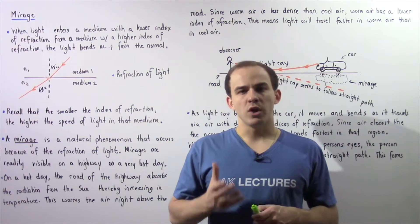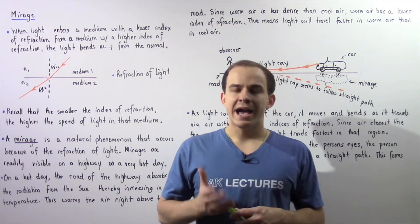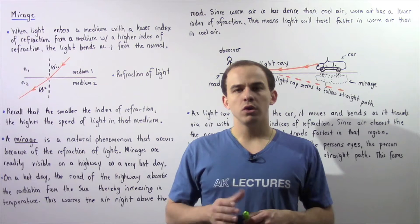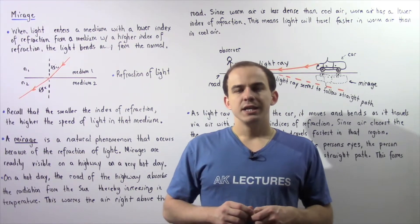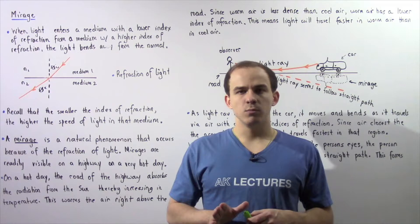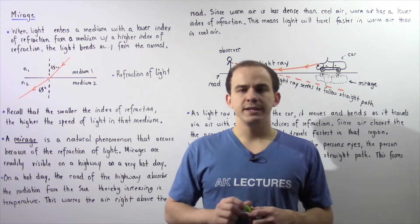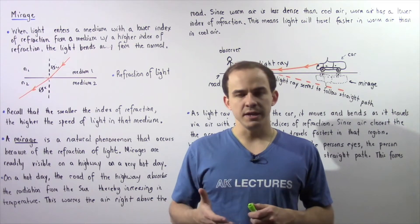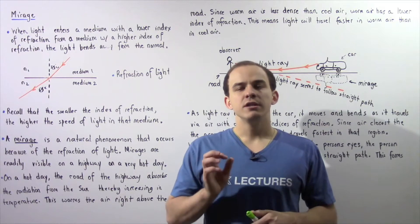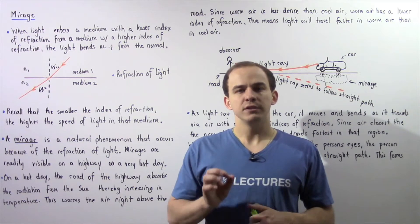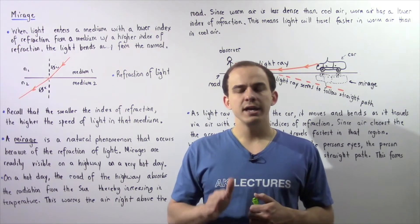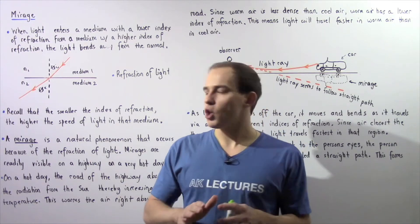Before we define what a mirage is and how a mirage is formed, let's recall the refraction of light. When a ray of light enters a medium with a lower index of refraction from a medium with a higher index of refraction, that ray of light will refract or bend away from the normal line.